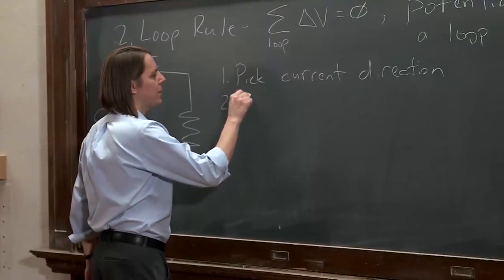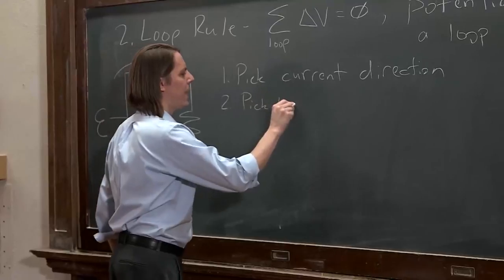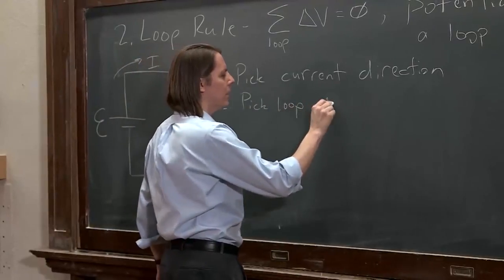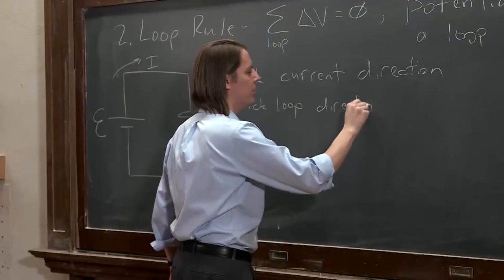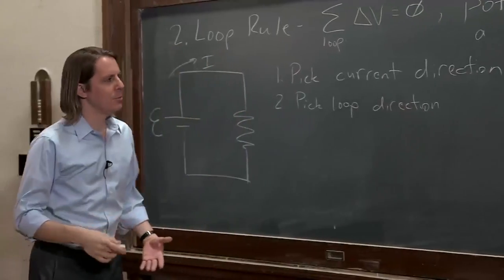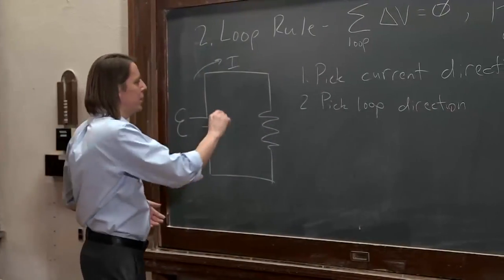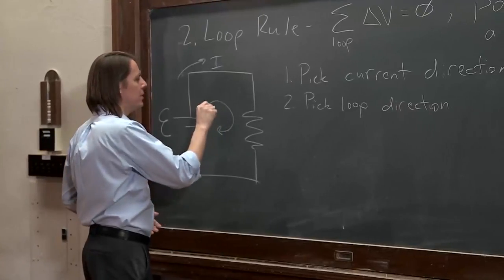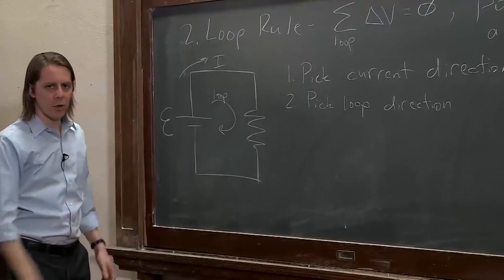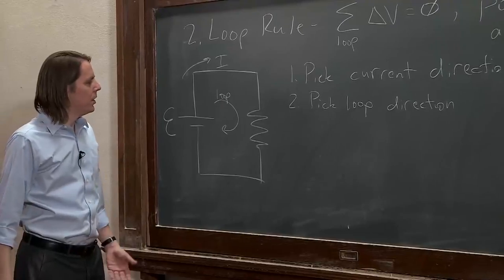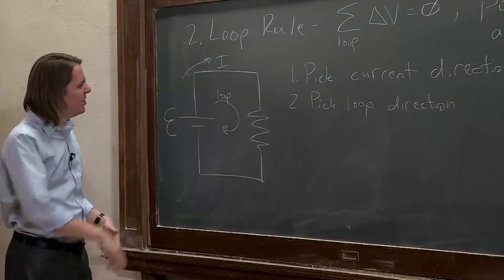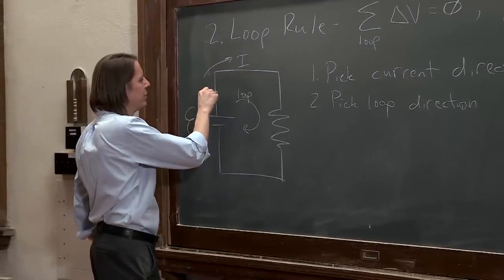Pick current direction. And then two, we need to pick a loop direction. They don't have to be the same direction. They won't always be when you get into more complicated circuits. But a loop direction means we're going to walk around this circuit, think about the potential, therefore we have to go in some direction. So I like to draw something like that, meaning we're going to go clockwise around the loop. You could go counterclockwise if you wanted to, but I just always go clockwise just to avoid confusion.